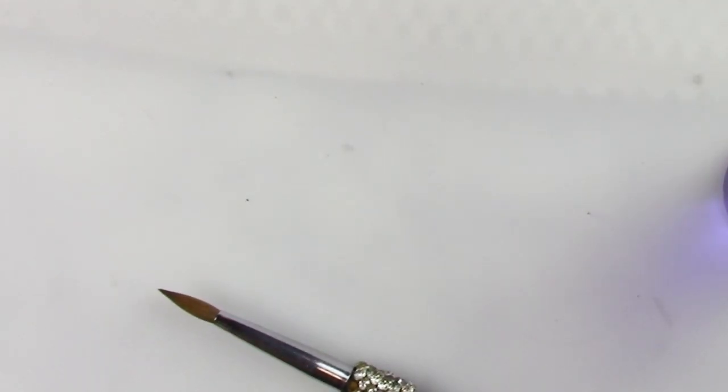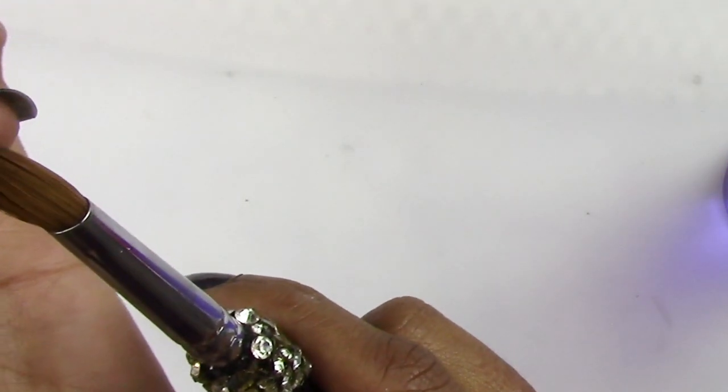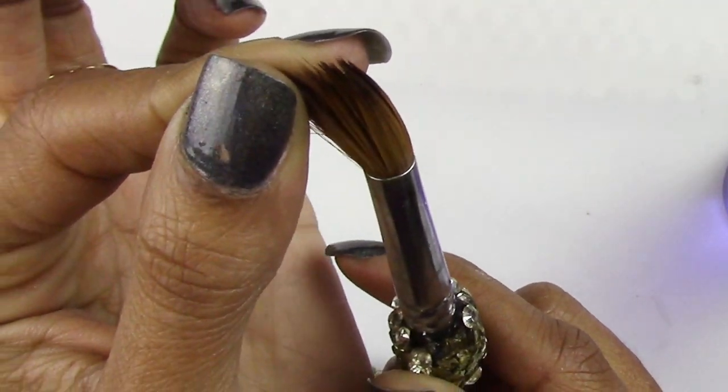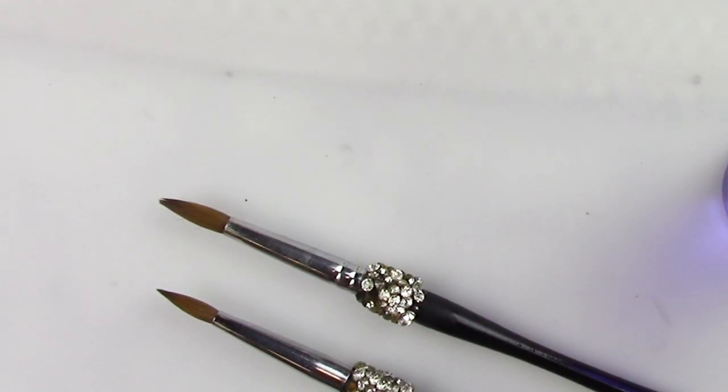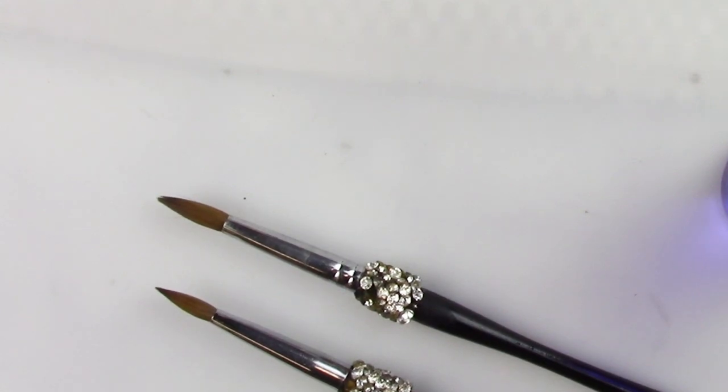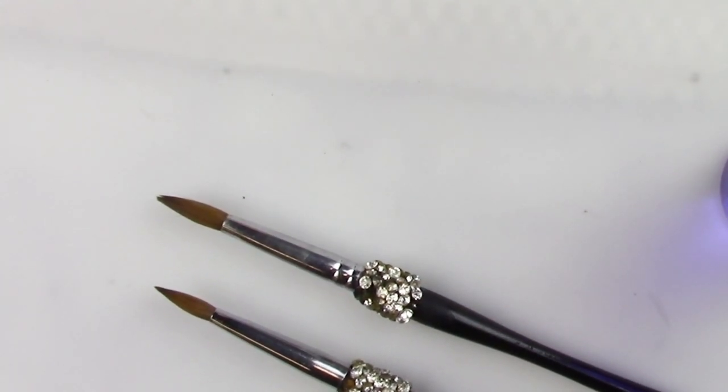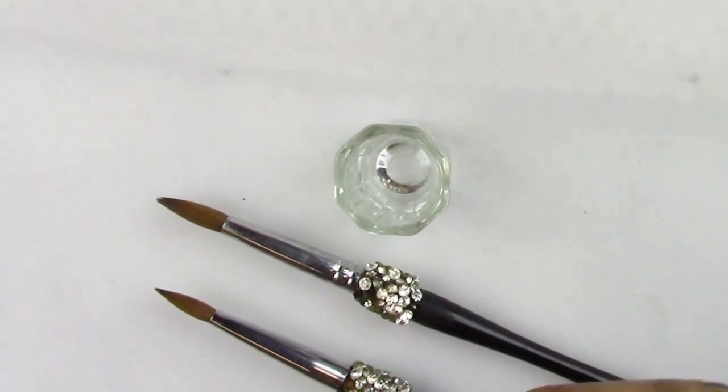You see how this brush is real stiff, and when I do that it's not flowing. When I tell you flowing, I'm going to get a container here. You really just need something small like that to hurry up and wash your brush.